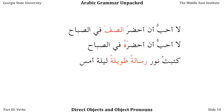If the object is feminine, it's represented by هي and therefore the suffix هـا. So كَتَبَتْ نور رسالةً طويلةً ليلة أمس becomes كَتَبَتْها نور ليلة أمس — 'Noor wrote it last night.' We simply attach the pronoun to the end of the verb. This can cause the object to go in front of its subject, so in English it reads 'She wrote it, Noor, last night,' where نور is the person doing the writing, not the thing being written — a little confusing in word order for an English speaker but not hard to get used to.